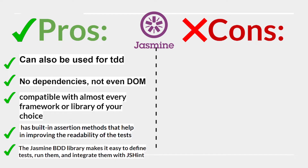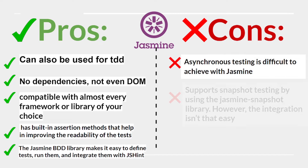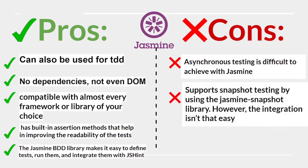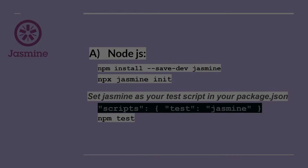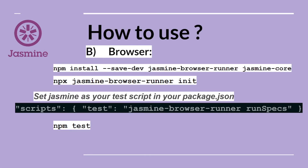The Jasmine BDD library makes it easy to define, run, and integrate tests with JSHint. Cons: asynchronous testing is difficult to achieve with Jasmine, snapshot testing support requires the jasmine-snapshot library but integration isn't easy, and setup can be complex for Node.js. A specific structure is used for browser-based Jasmine setups.